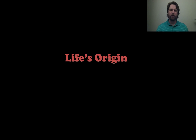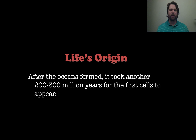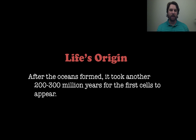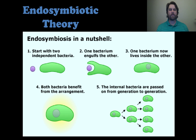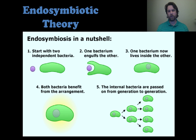So let's now talk about life's origin. We talked about organic molecules in a couple of experiments, but now let's talk about actual cells — the first cells. After those oceans formed about 3.8 billion years ago, it took about another 200 to 300 million years for us to see the first cells form. The main theory for the first complex cells is something called endosymbiotic theory.